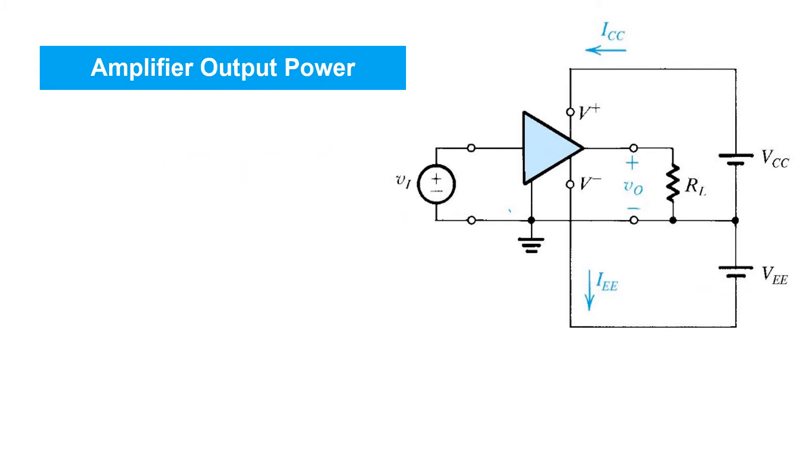The amplifier output power is the power flowing into the load, which we'll call PL. It's given simply by the voltage across the load, VO, times the current flowing into the load, IL.